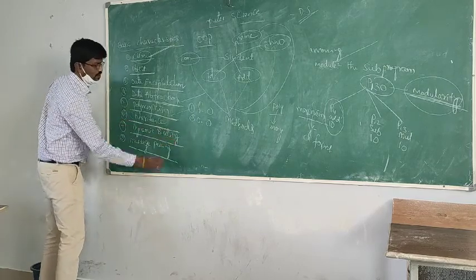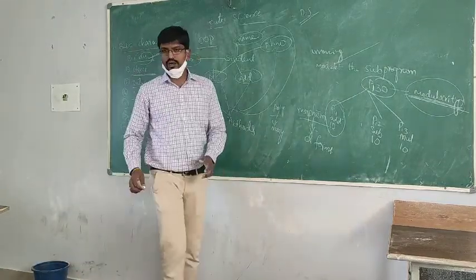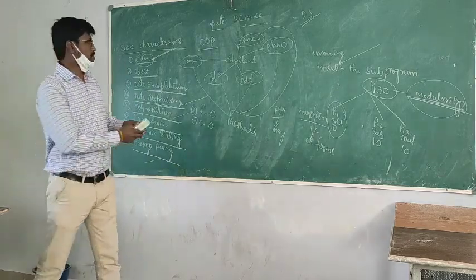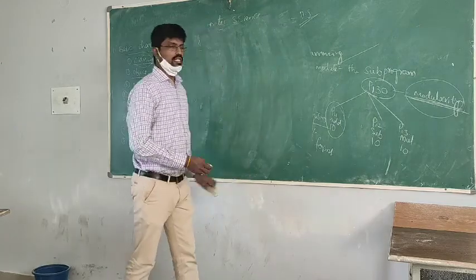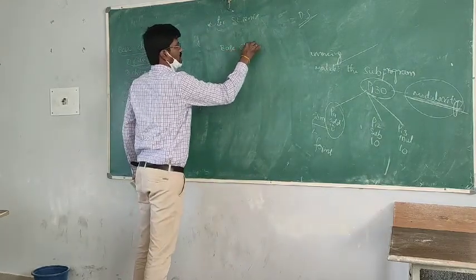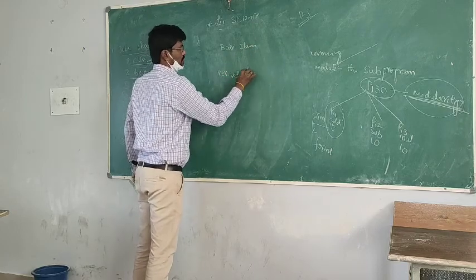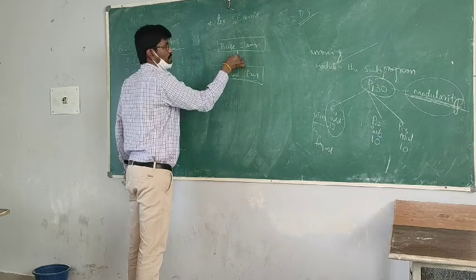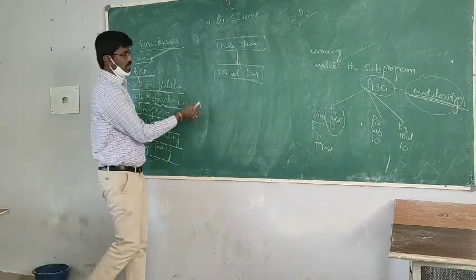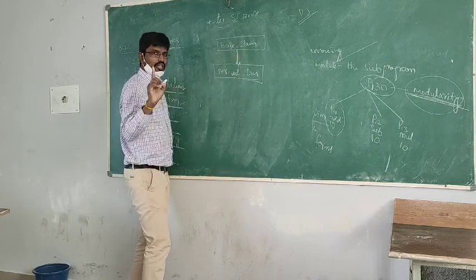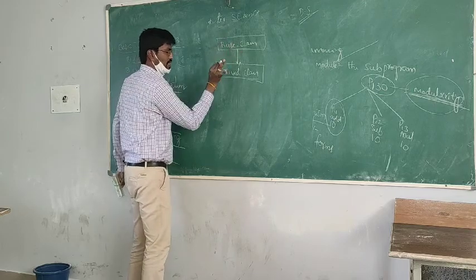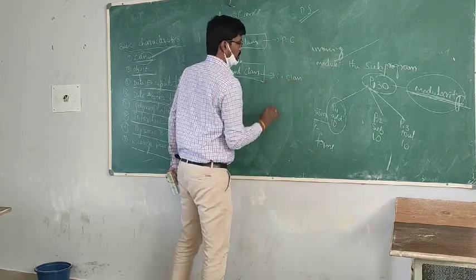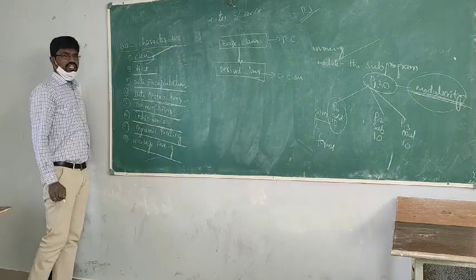What is inheritance? The process of acquiring properties from one class to another class is called inheritance. There are two classes: the base class (also called parent class) and the derived class (also called child class). The derived class acquires properties from the base class.